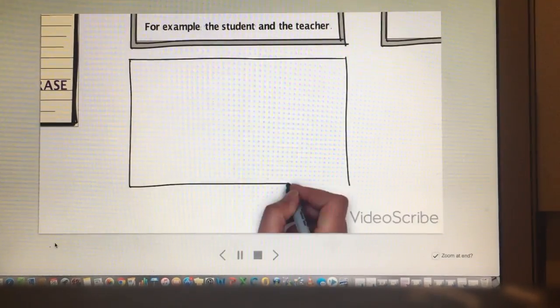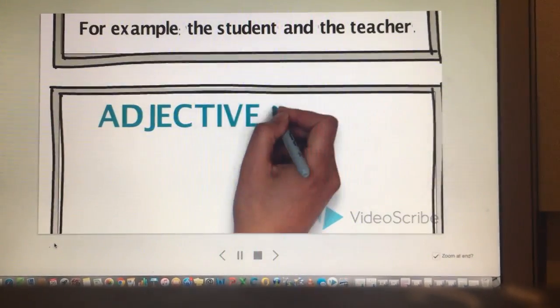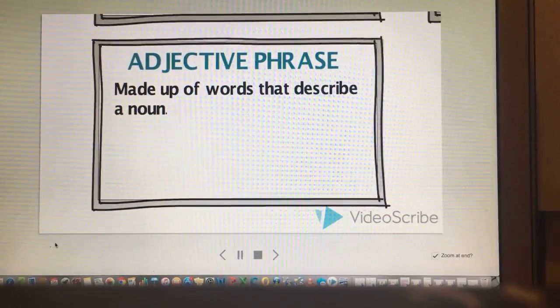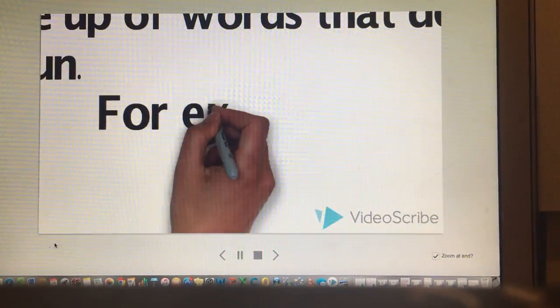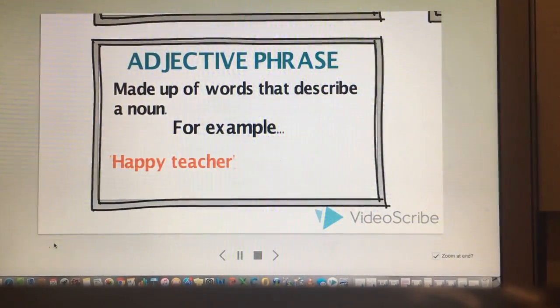Next are adjective phrases. Adjective phrases are made up of words that describe a noun. For example, happy teacher, tall teacher.